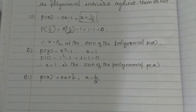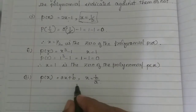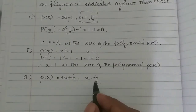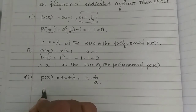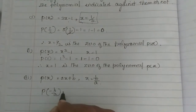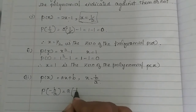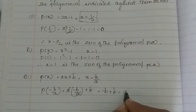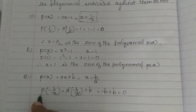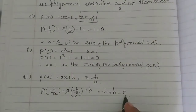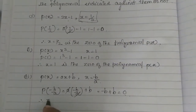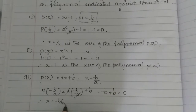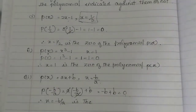Third subdivision: p of x is equal to ax plus b, where x is equal to minus b by a. So p of minus b by a is equal to a into minus b by a plus b. The a and a get cancelled, giving minus b plus b, which is equal to 0. Therefore x equal to minus b by a is the zero of the polynomial p of x.